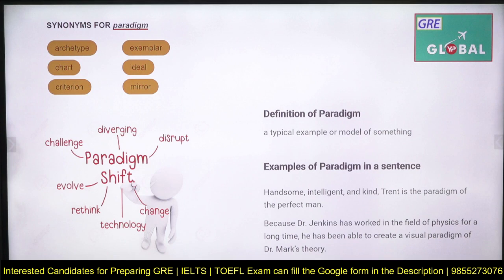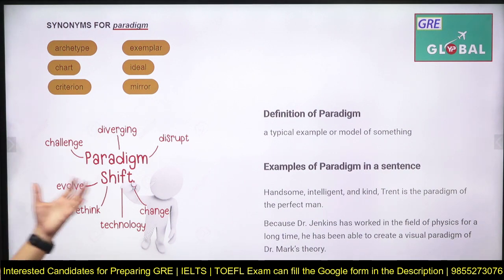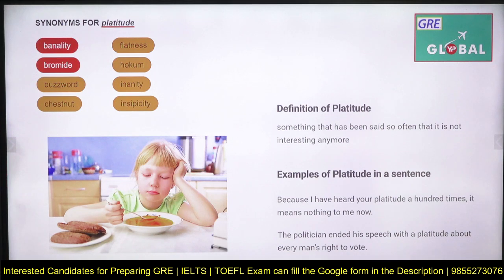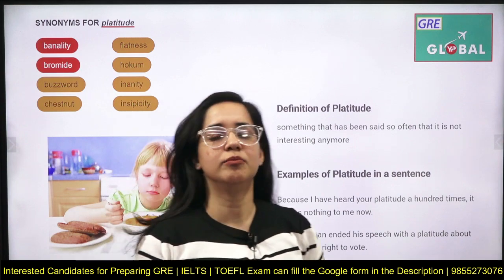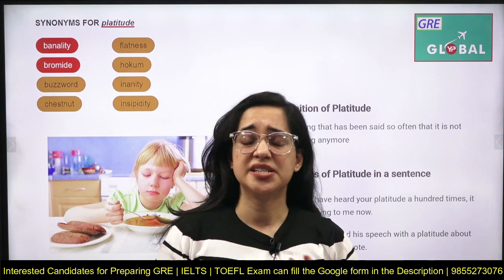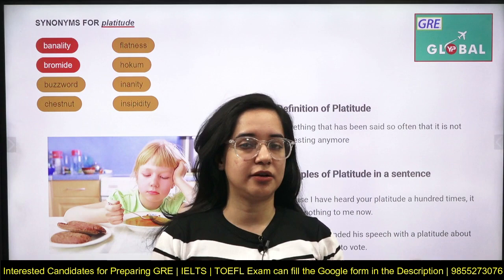Paradigm means something that is a typical example of a model or archetype. For example, 'handsome, intelligent, kind' is a paradigm of a perfect man — it defines what a perfect man looks like. Platitude is a statement that has been said so often it is no longer interesting. Like, 'I've heard your platitude a hundred times — it means nothing to me.' It has become so common it lost its impact.